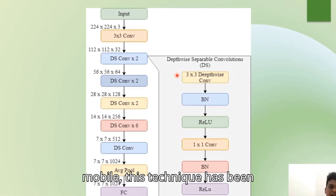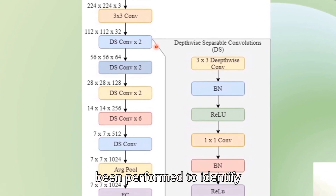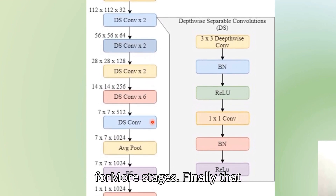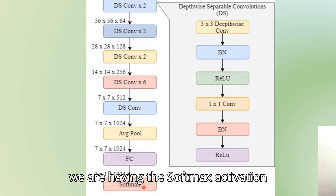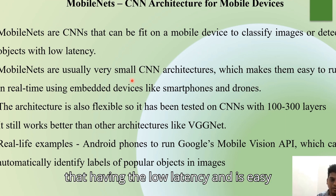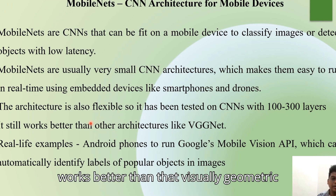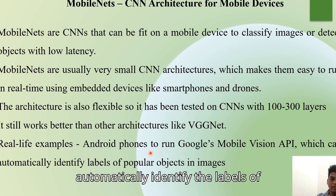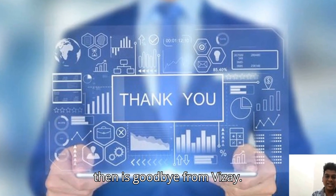The final type is MobileNet architecture, designed for embedding in mobile devices. The input is passed through a 3x3 convolution layer, followed by depth-wise separable convolution to identify important features, then more depthwise separable convolution stages, average pooling, a fully connected layer, and a softmax activation for the final output. It is mainly used on mobile devices to classify images or detect objects with low latency, running in real-time on embedded devices like smartphones and drones. It can be tested on CNNs with 100 to 300 layers and works better than VGG. A real-time example is Google's Mobile Vision API on Android phones, which can automatically identify labels of popular objects in images.